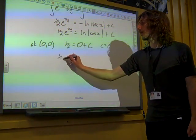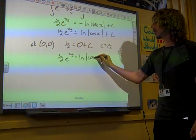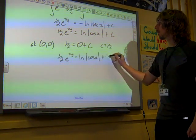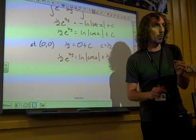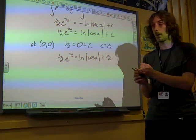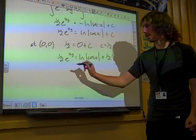OK, we're there. We've got 1 half e to 2y is ln cos x plus 1 half. However, the question wants us to write it in the form y as a function of x. So we've got to do something with that. Let's get rid of the halves by doubling everything.